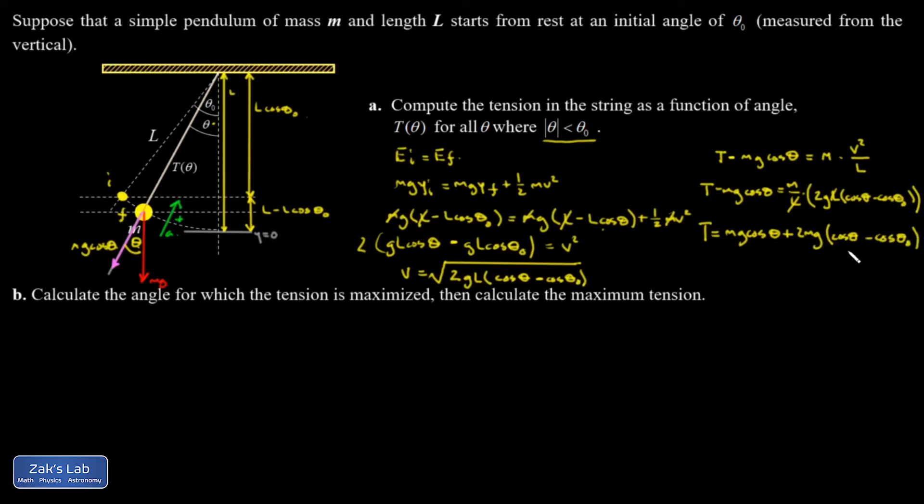When I distribute that 2mg, it gives me a total of 3mg cosine theta. So T is equal to 3mg cosine theta minus 2mg cosine theta naught.